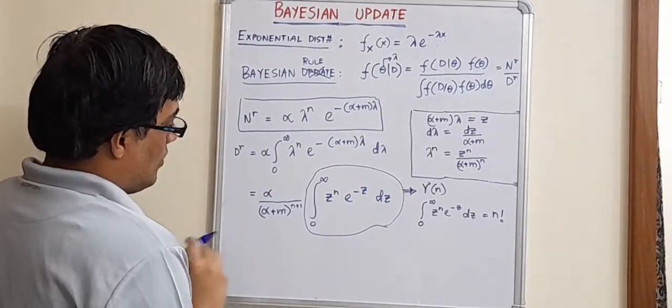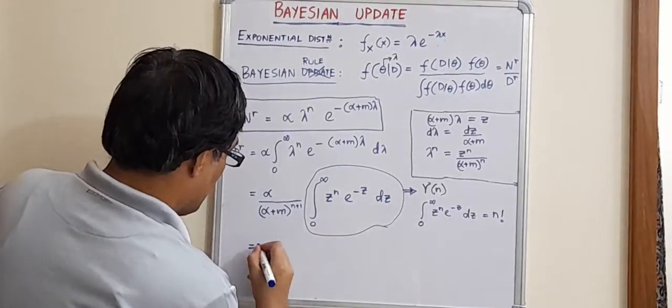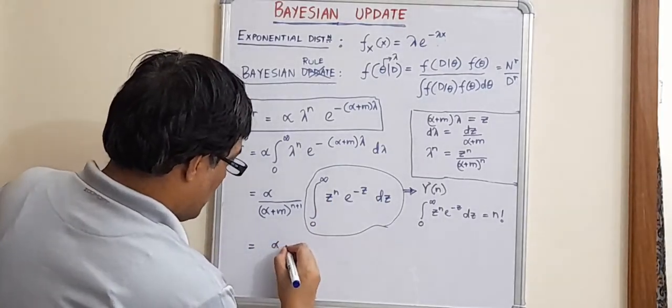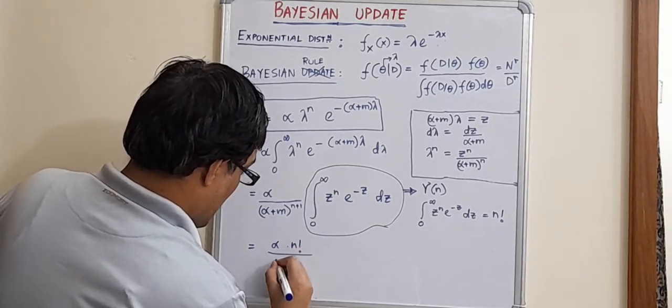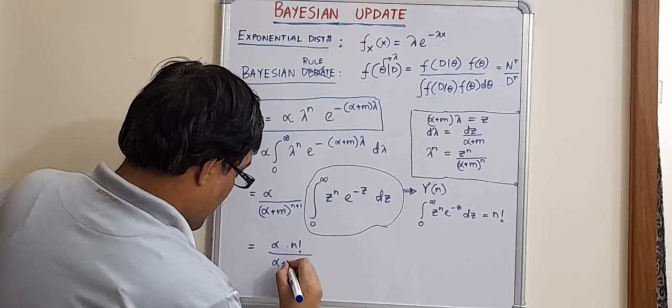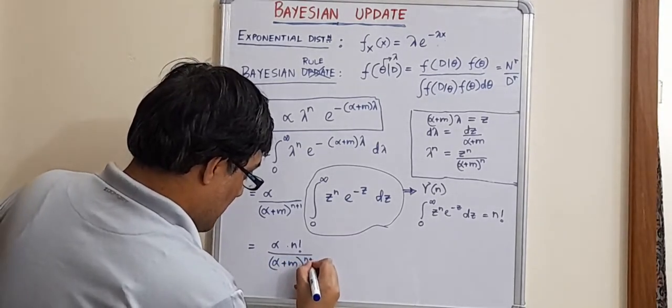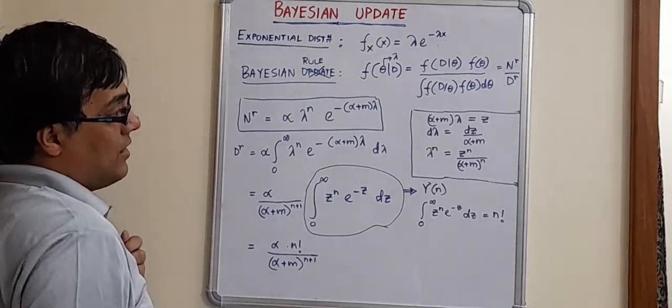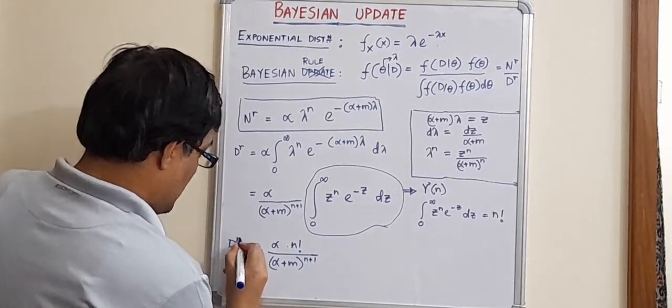So, what can we write here? We can write this as alpha into factorial n divided by alpha plus m to the power n plus 1. Now, the story is not over yet. We have just evaluated the denominator.